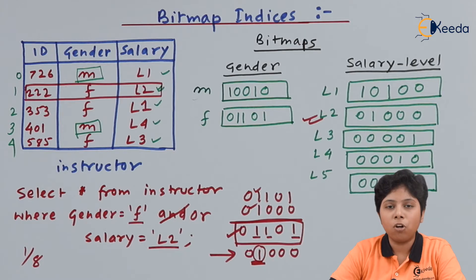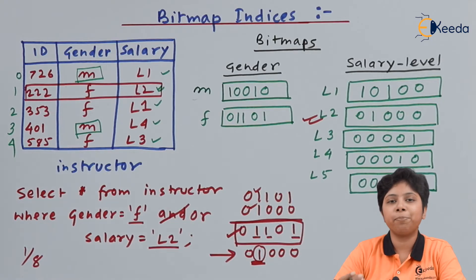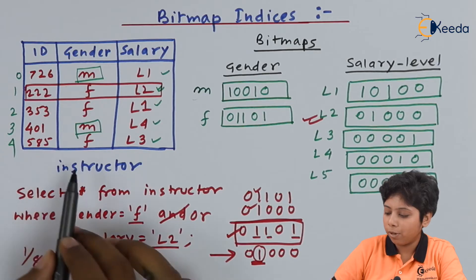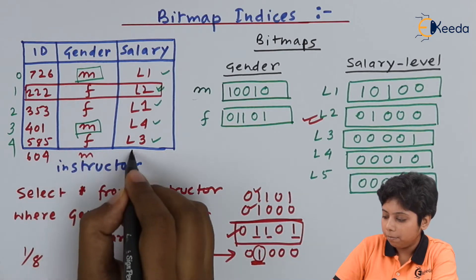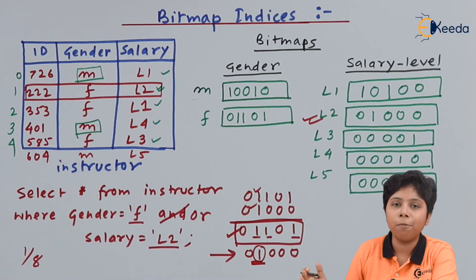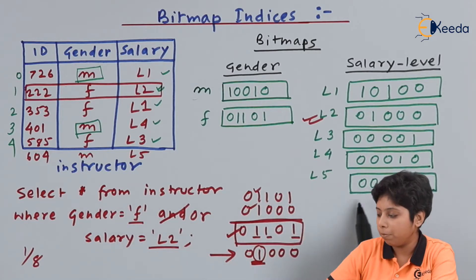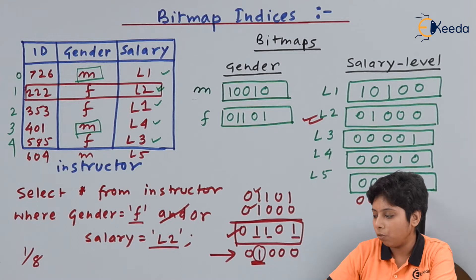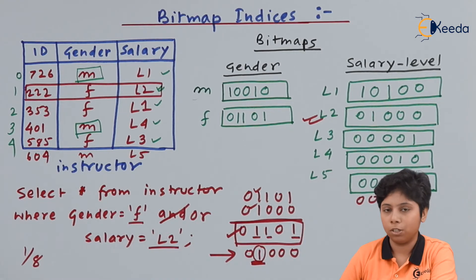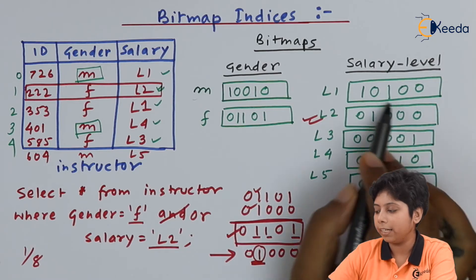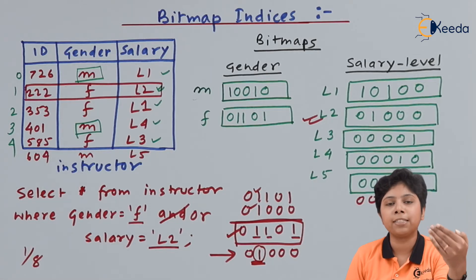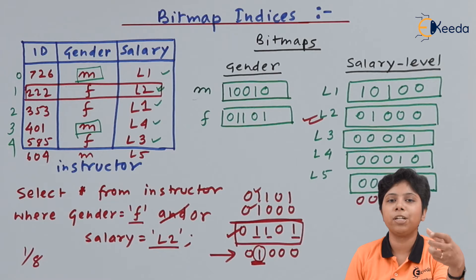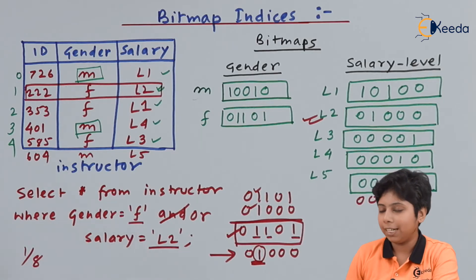One more feature: if we want to insert an extra entry into the bitmap, we just add one bit. For example, adding a new record with gender M and salary L5 means all bitmaps get one new bit appended. For L5, the bitmap becomes 0 0 0 0 0 1. The new bit is simply appended to the last position in each bitmap, making bitmap indices useful for dynamic updates.